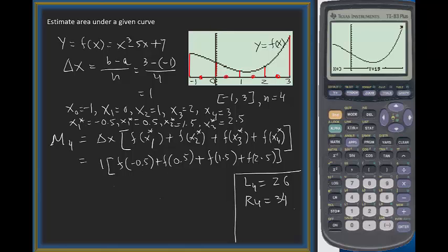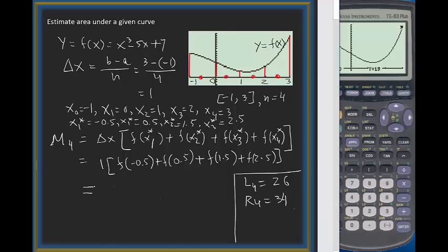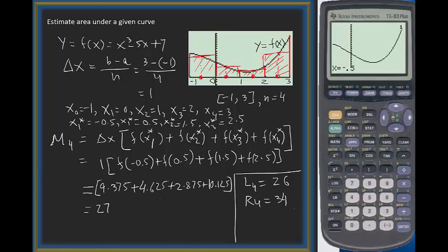We'll be using the calculator and getting all these values. Now we trace the value at the midpoints. The first one is -0.5, which gives me 9.375, then you have 0.5 that gives me 4.625, 1.5 gives me 2.875, and 2.5 gives me 10.125. When you add all of them together, this is 27, so we got our midpoint approximation also.